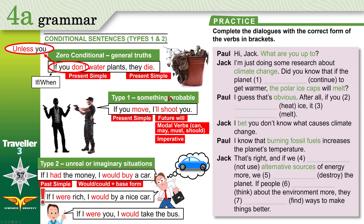This is something probable, likely to happen — conditional type 1. We use present simple with 'if,' so we add -s to the verb 'continue' because we're talking about 'the planet,' which is 'it.' If it continues to get warmer, the polar ice caps will melt — future will. After all, if you heat ice, it melts. What situation is this? This is a general truth — zero conditional. We add -s for 'it melts.' 'If you heat' — 'you,' so no -s here.